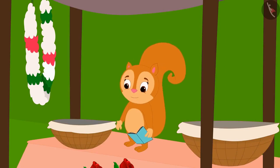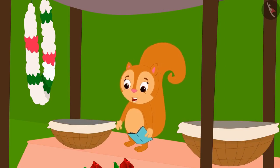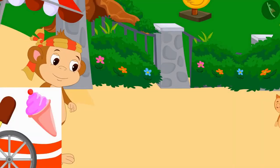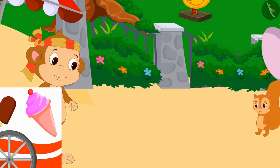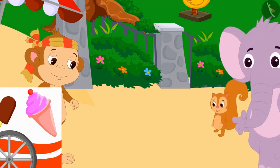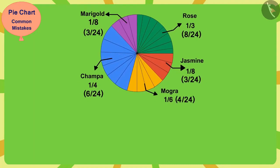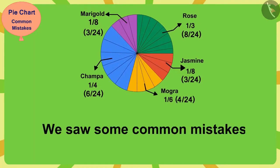Thank you, Appu. Now I will never repeat this mistake. For this help, allow me to buy an ice cream for you from Babban's ice cream stall. Both Chanda and Appu went to eat ice cream. Children, in this video we saw some common mistakes related to the pie chart.